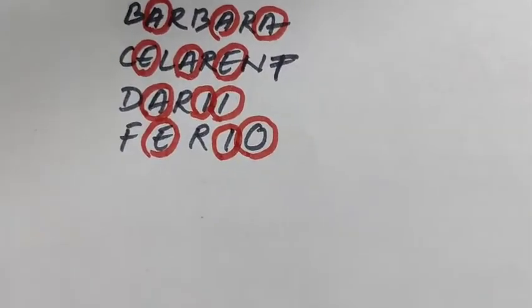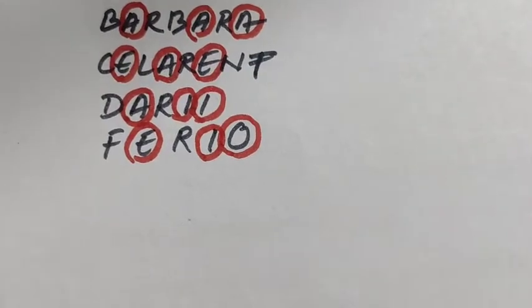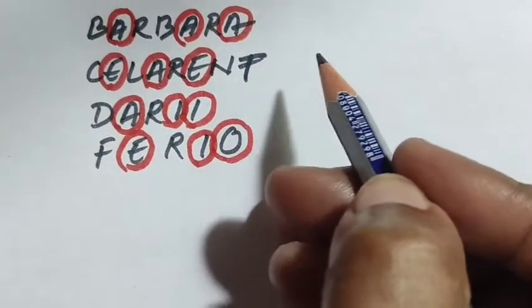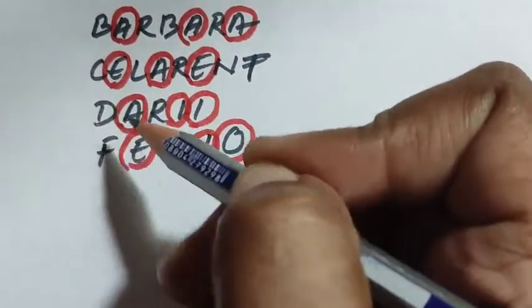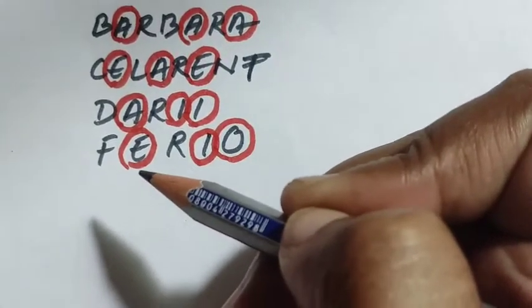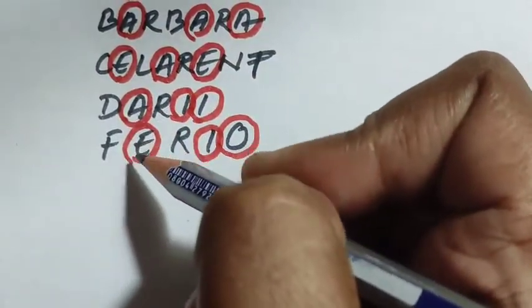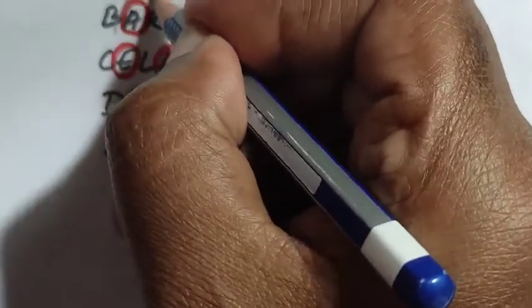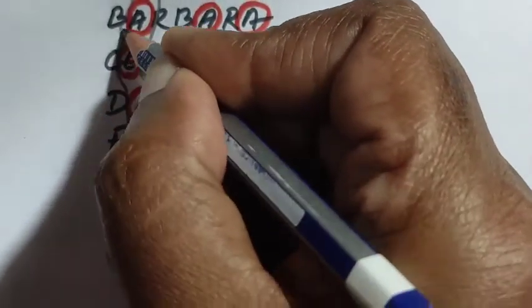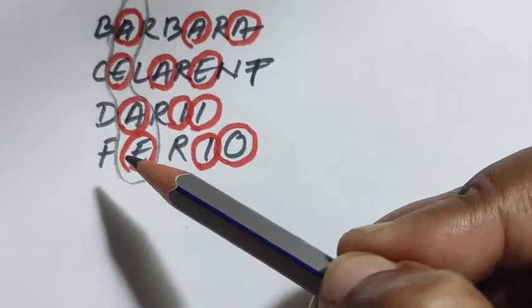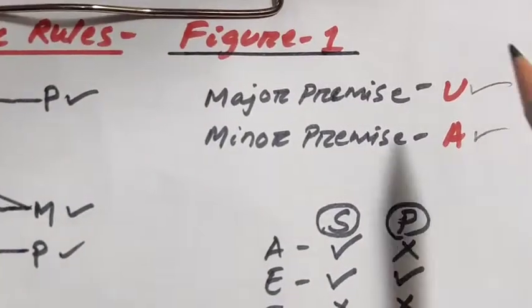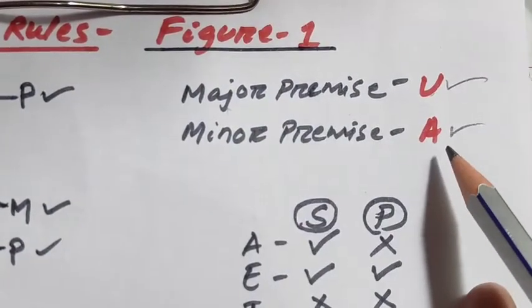Now I will examine the major premise across all four valid modes. The major premise propositions are: A in Barbara, E in Celarent, A in Darii, and E in Ferio. I notice that all of these — A, E, A, E — are universal propositions. Therefore, according to the rules, the major premise must be universal. This proves Rule 1 of Figure 1.